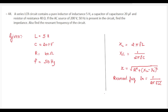This question is taken from the physics model paper 2 of 2024-25, question number 44. A series LCR circuit contains a pure inductor of inductance 5 henry, a capacitor of capacitance 20 microfarad, and a resistor of resistance 40 ohms. If the AC source of 200 volt, 50 hertz is present in the circuit, find the impedance and also find the resonant frequency of the circuit.